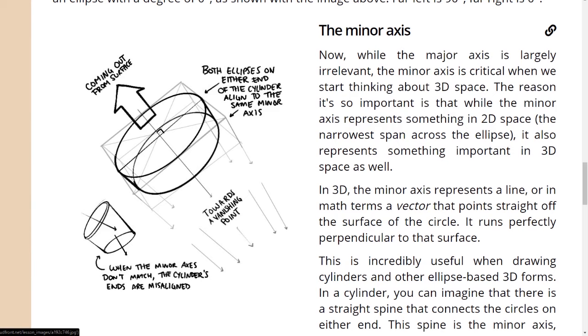In 3D, the minor axis represents a line, or in math terms, a vector, that points straight off the surface of the circle. It runs perfectly perpendicular to that surface.